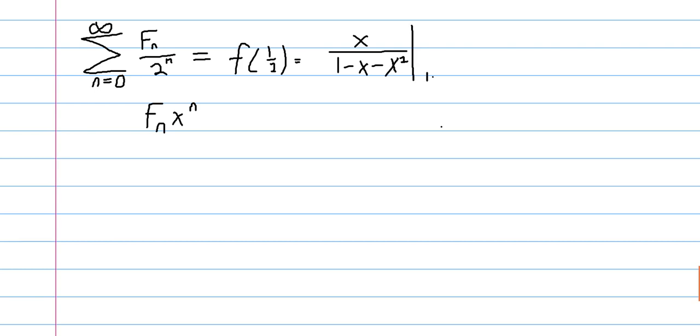And so we need to evaluate that at one half. We have one half at the top, and then in the bottom we have one minus one half is a half, minus one half squared, which is one fourth. So one half minus one fourth is one fourth. One half over one fourth is actually two, so this is a really nice answer, it's just two.